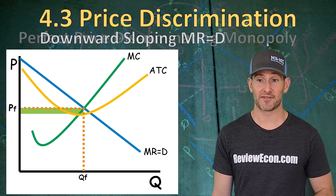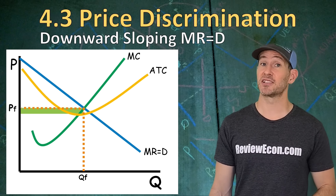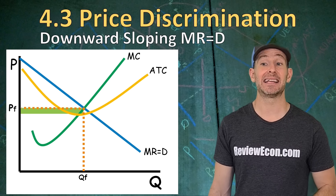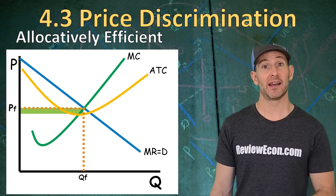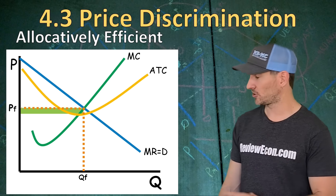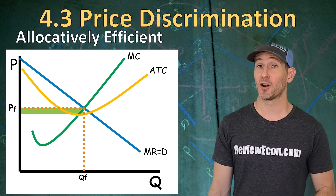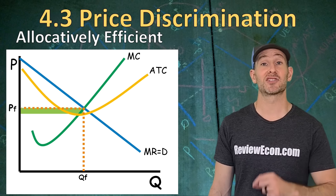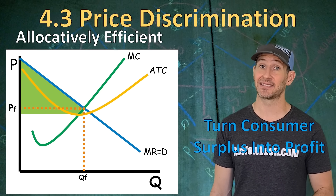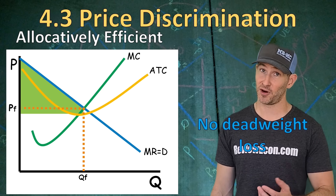If this firm can perfectly price discriminate, the marginal revenue merges back with the demand. This firm produces the MR equals MC profit maximizing quantity, and that is the allocatively efficient quantity because the price of the last unit produced equals marginal cost. Since this firm has perfectly price discriminated, it has turned all of the consumer surplus into economic profit. Since they're allocatively efficient, there's no more deadweight loss as a result of perfect price discrimination.